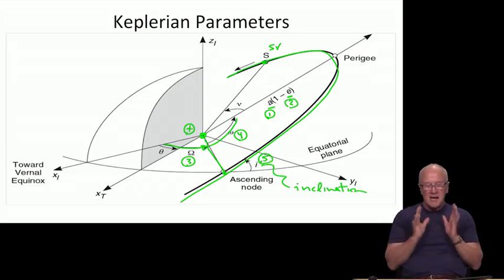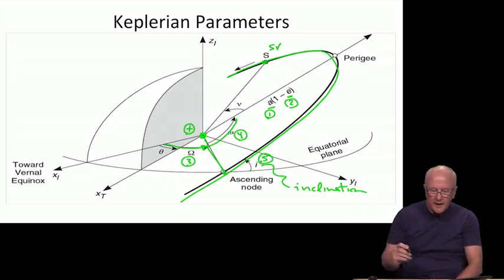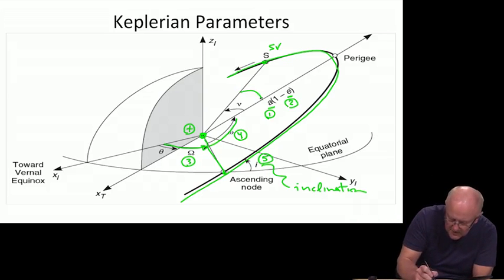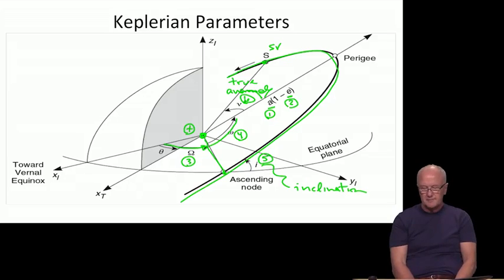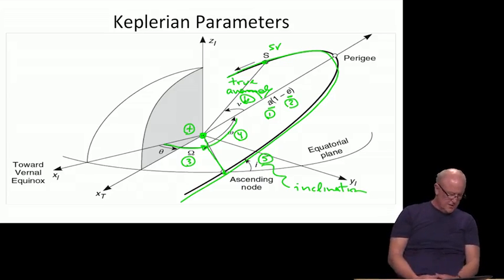By the way, there's nothing magical about the numbering system I'm giving here, this one through five. But the important thing is that altogether there are six Keplerian parameters. The sixth one is required not to describe the shape of the orbit, not to describe the orientation of the orbit relative to the Earth, but rather to place the satellite in the orbit. So it comes from a third goal. And that, as we've already mentioned, is right here. That's the true anomaly. And we can call that parameter number six, and give it the symbol nu.